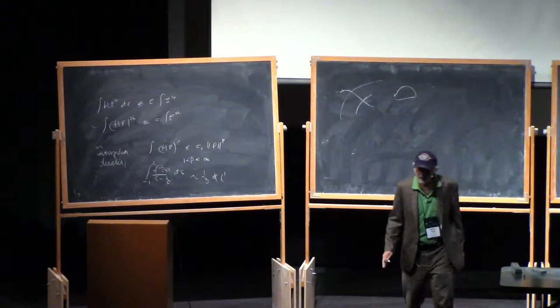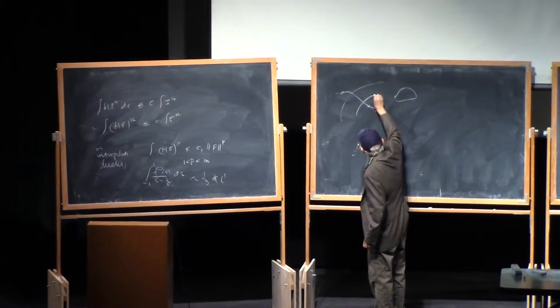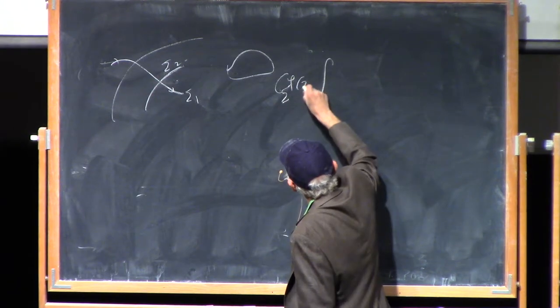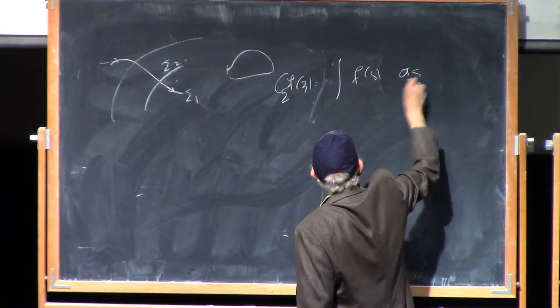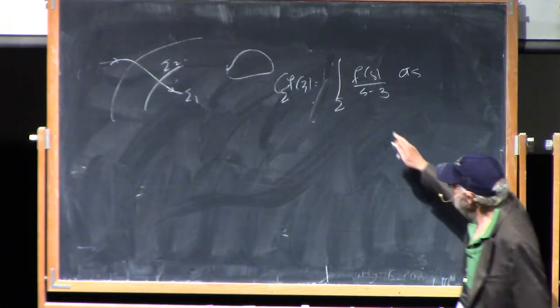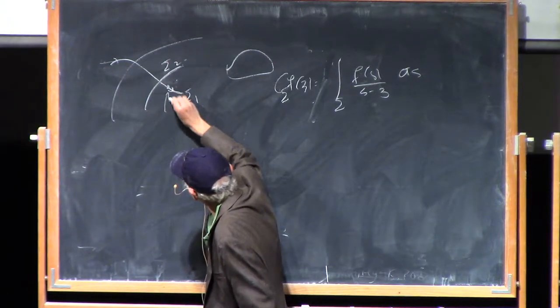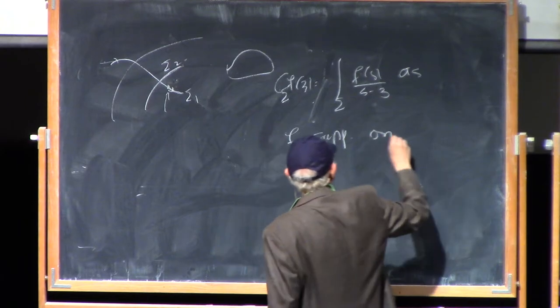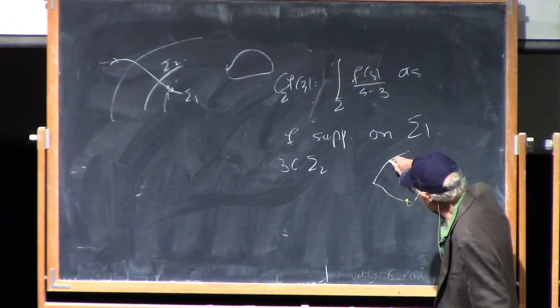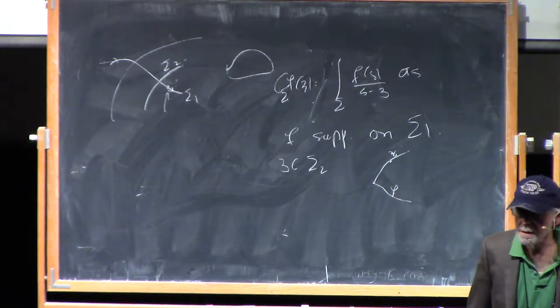So we would certainly want something like the following. Suppose this is the contour, the part of the contour here which is sigma 1, and this is the part of the contour which is sigma 2. Let's suppose that this vector f here is just supported on sigma 1, and let's take z now to belong to sigma 2. So I've got this picture here, z is sitting here, and f is supported here.